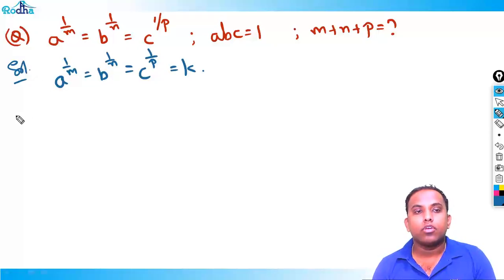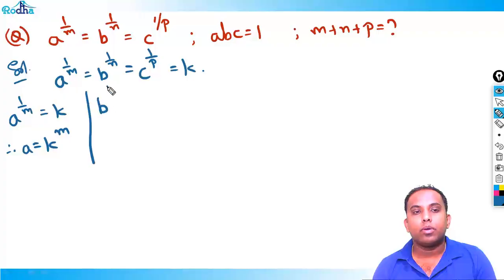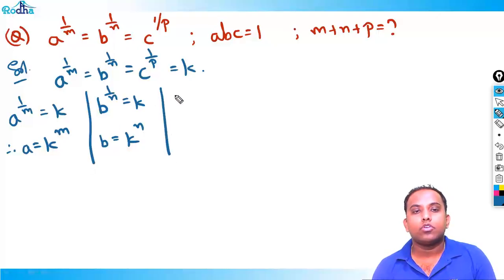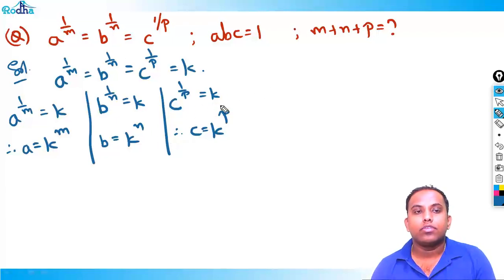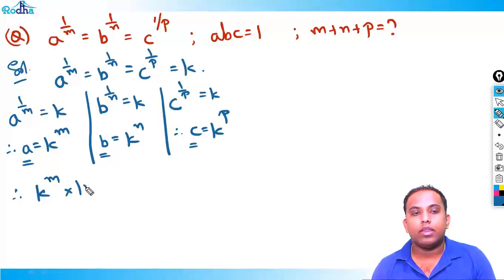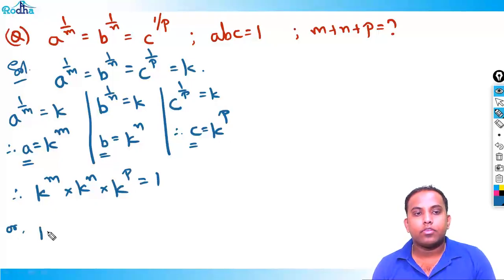Since a^(1/m) = k, we get a = k^m. Since b^(1/n) = k, we get b = k^n. Since c^(1/p) = k, we get c = k^p. Now since abc = 1, multiplying gives k^m × k^n × k^p = 1, so k^(m+n+p) = 1.